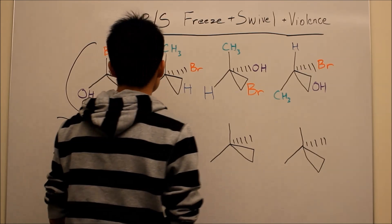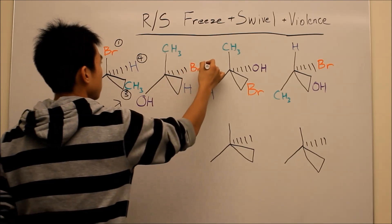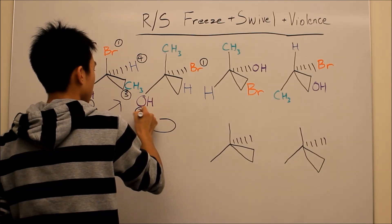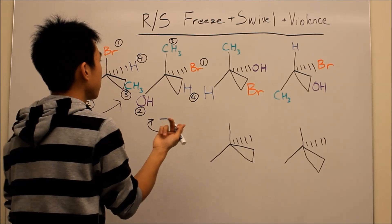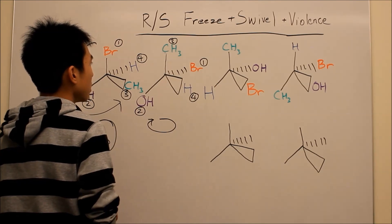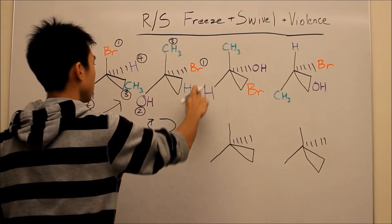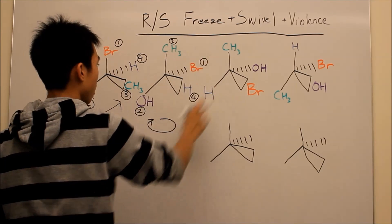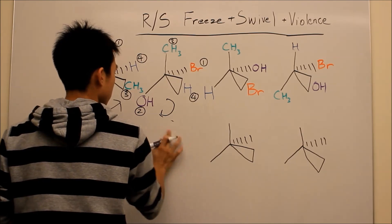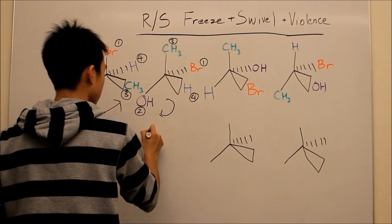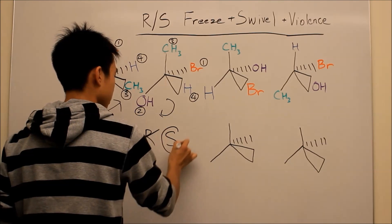Next one — your lowest priority group in the front. Let's carry over the ratings: 1, 2, 3, 4. Now our lowest priority group is in the front, so we have a little problem — you can't just do your normal R/S thing. What I like to do is just do your R/S first. Going 1, 2, 3 — that's clockwise, so that's R. But because your lowest priority group is in the front, it's not R, it's the opposite: S.